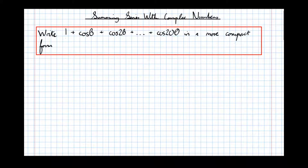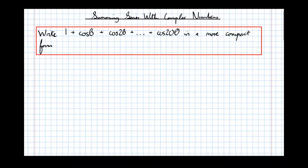In this video we're going to have a look at how we can use complex numbers to simplify the summing of series. We'll have a look at a problem where we're asked to write 1 plus cos theta plus cos 2 theta plus cos 3 theta, all the way up to cos of 20 theta, and how to write that in a more compact form using complex numbers.